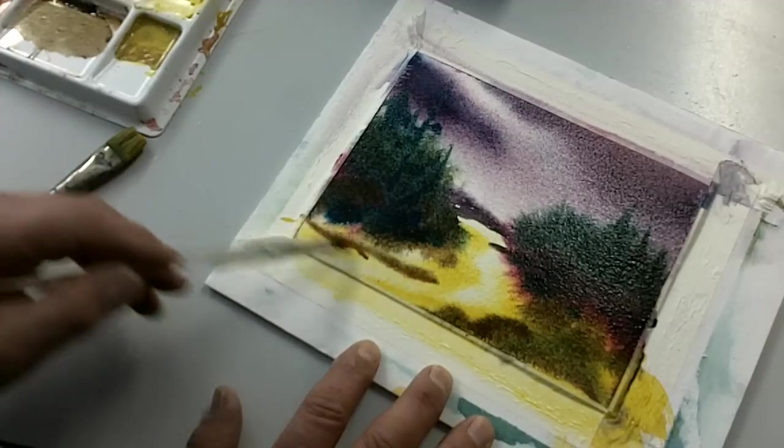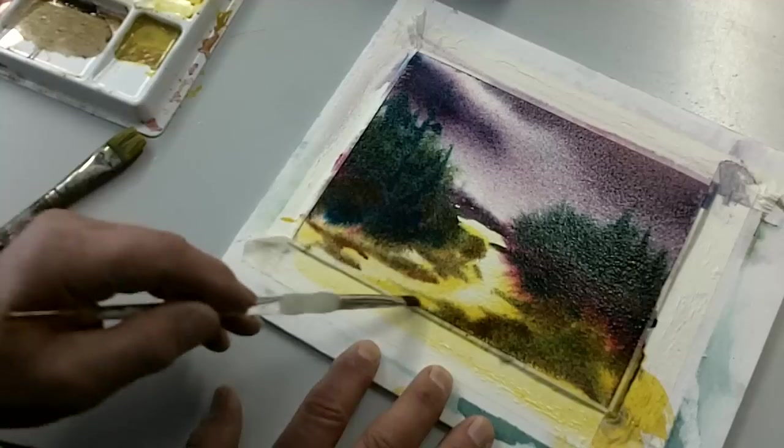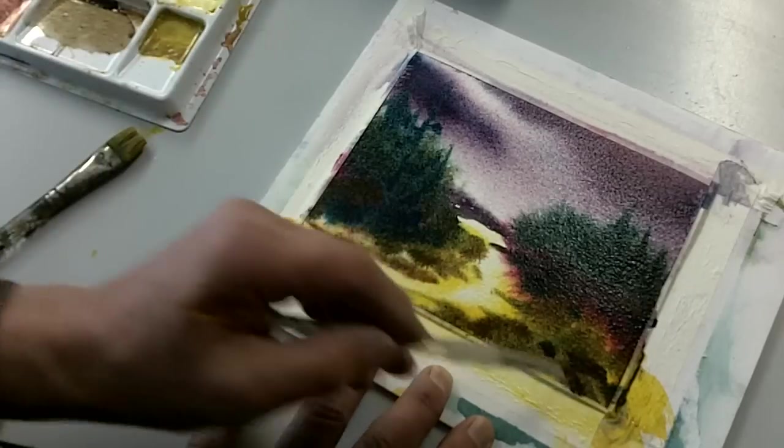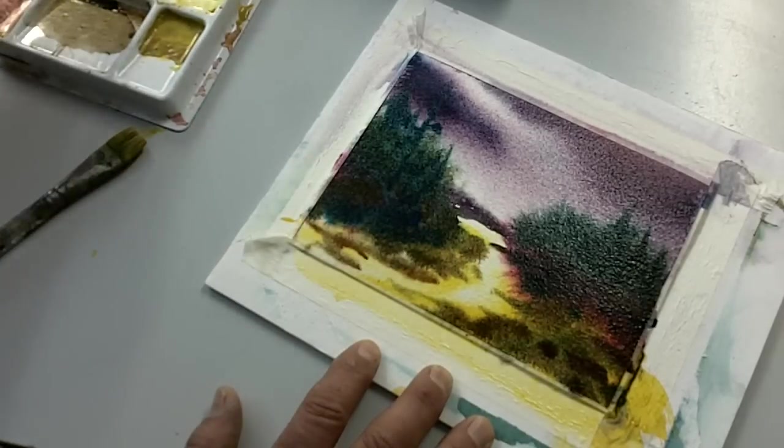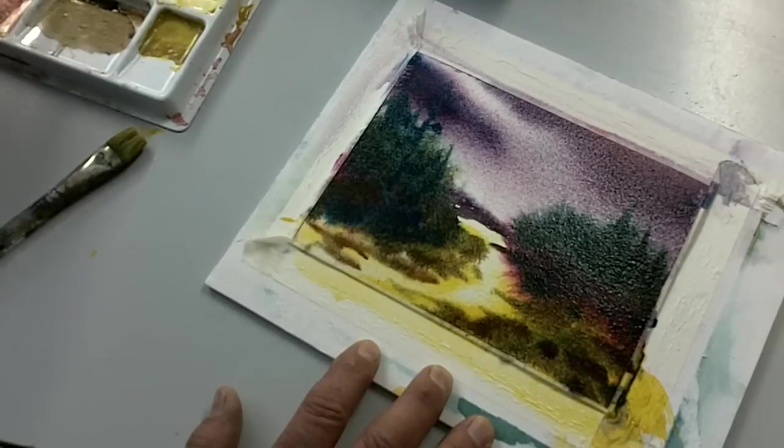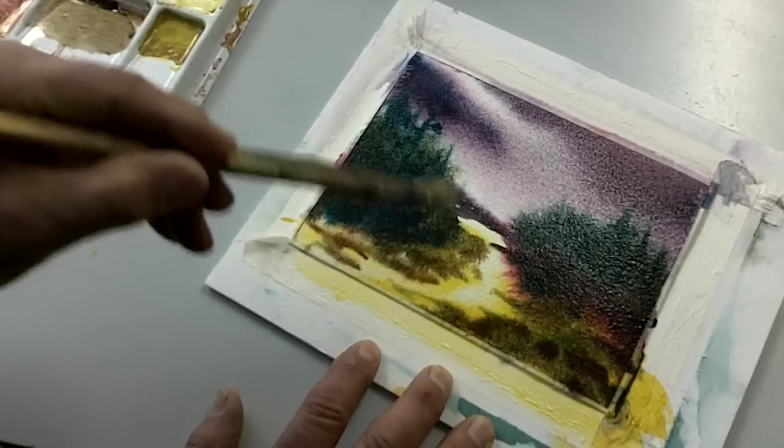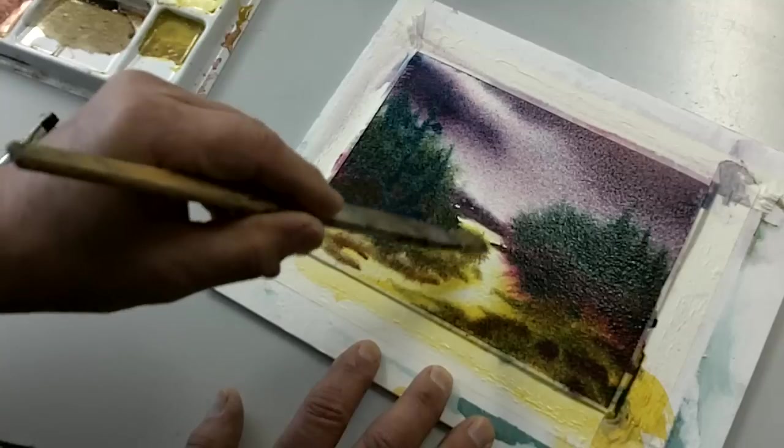All right, what are we going to put in here? Where's my little sucker brush? It's kind of a hard line there. It had a lot of yellow in it. It's kind of a hard line here. I don't really want that hard line there. I'll take that away.